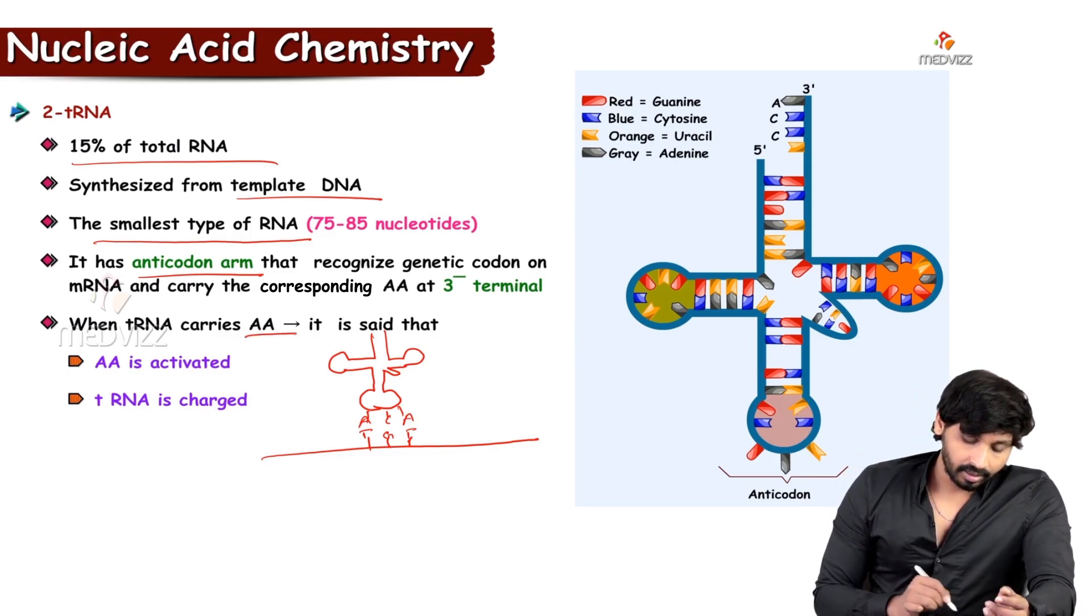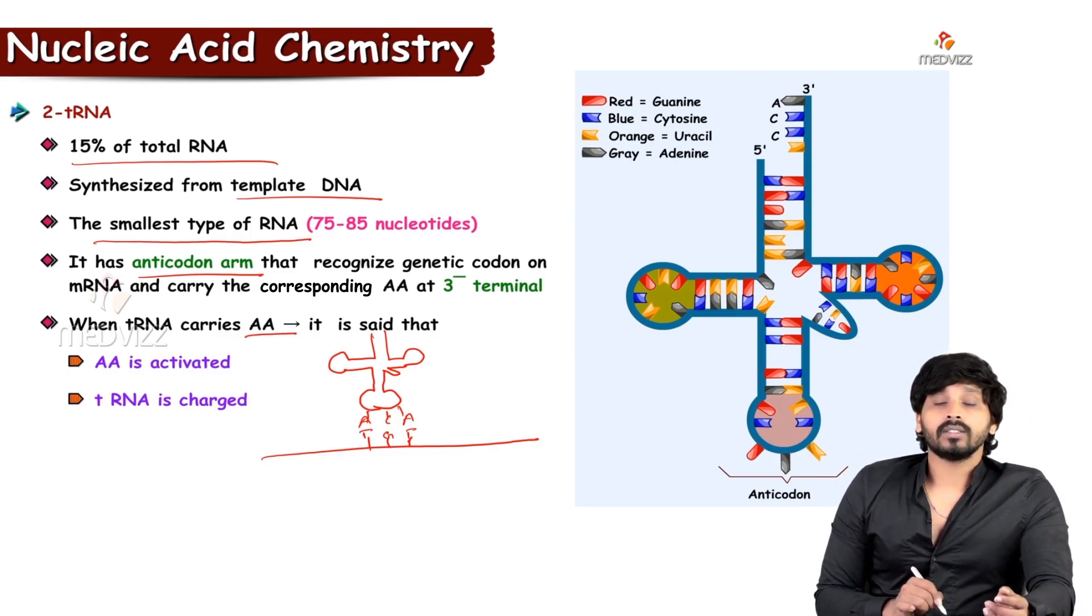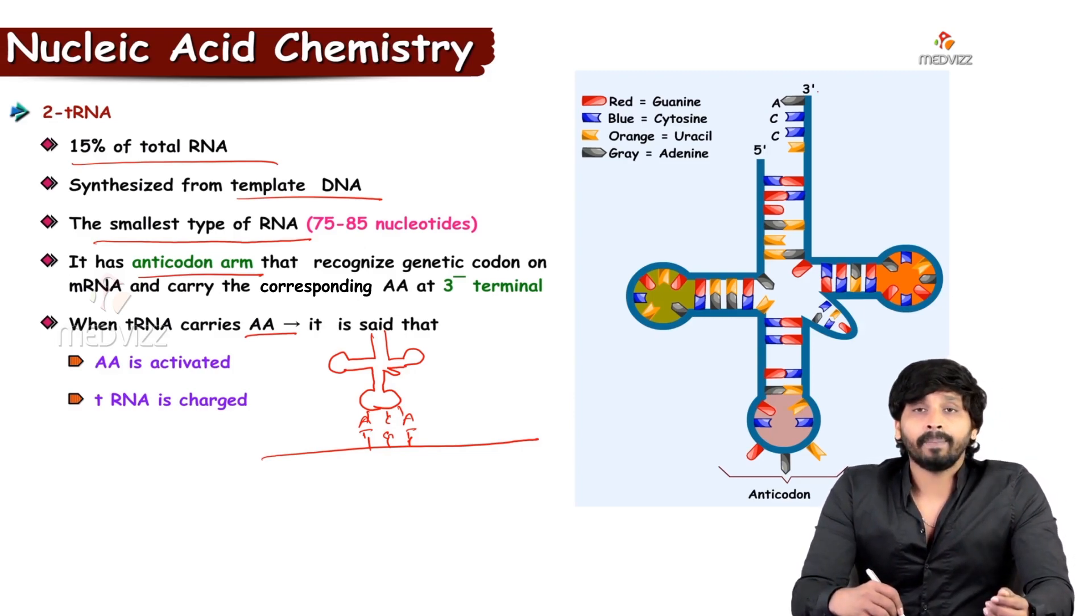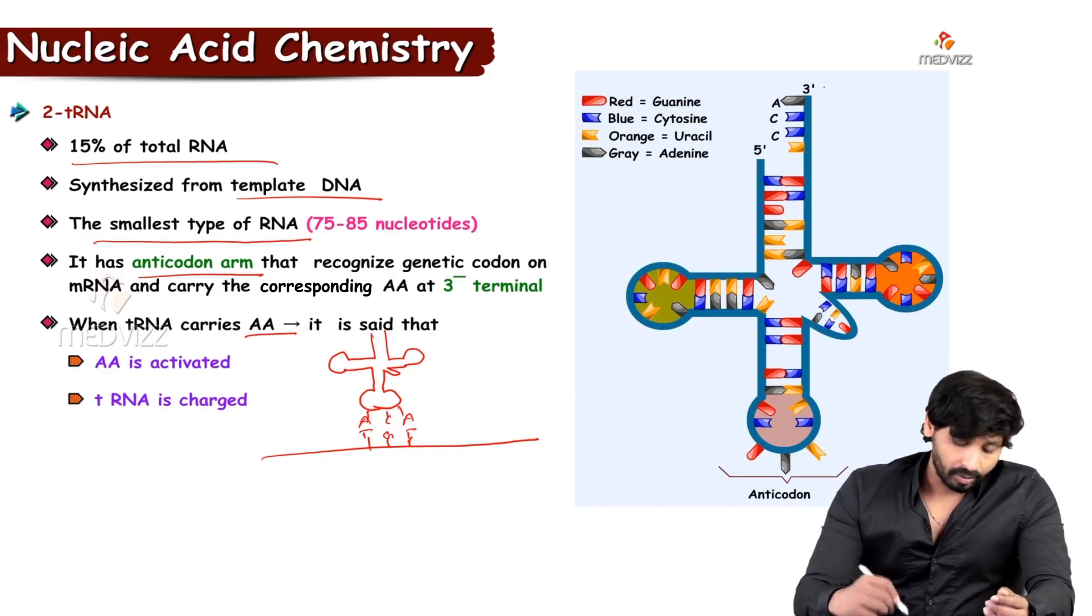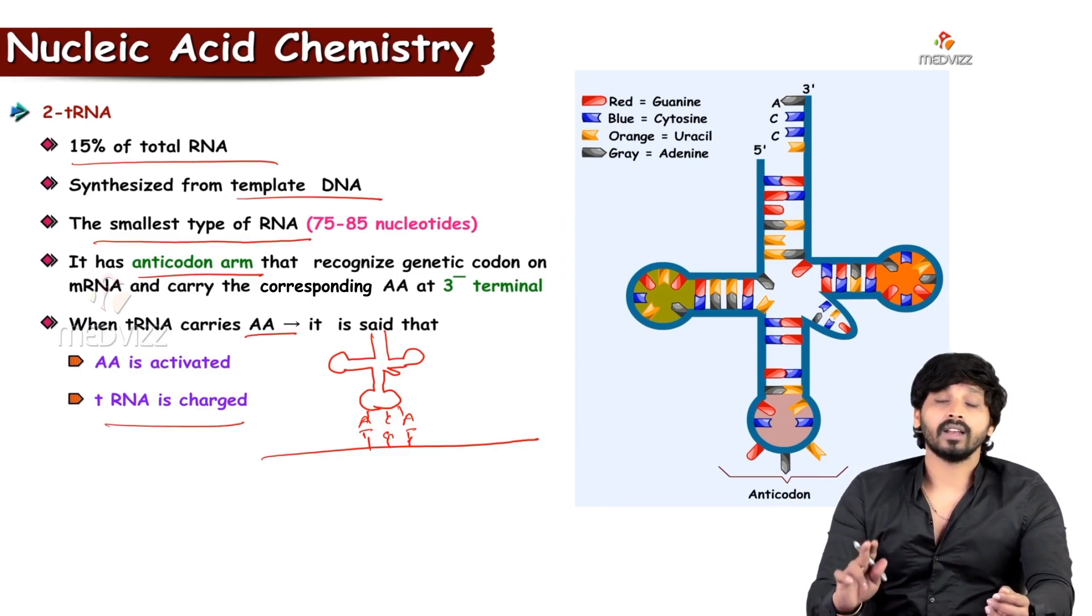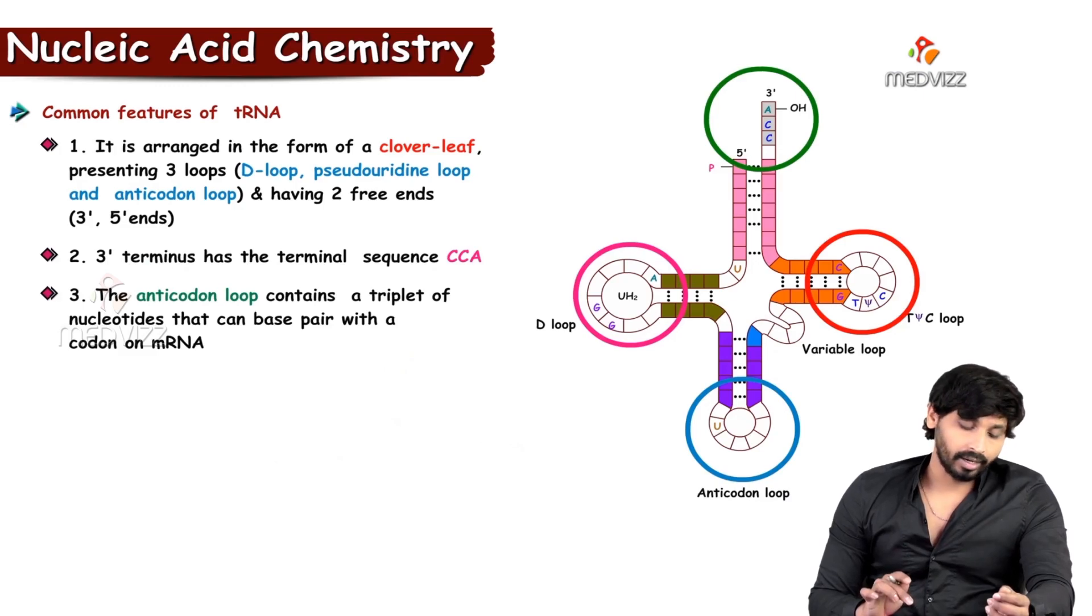Then only that particular tRNA can bind to the mRNA. When tRNA carries amino acid, that tRNA is activated. This amino acid is attached at the 3 prime end of the tRNA. When amino acid attaches to tRNA, that tRNA is known as charged tRNA.